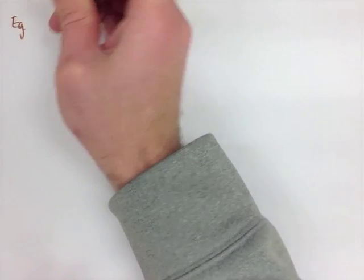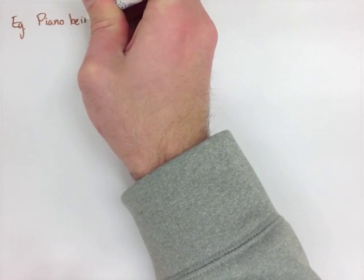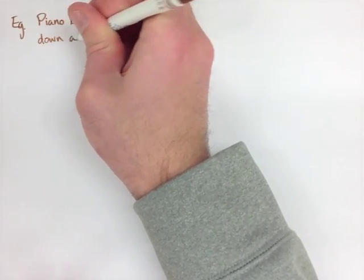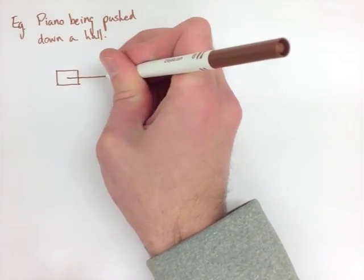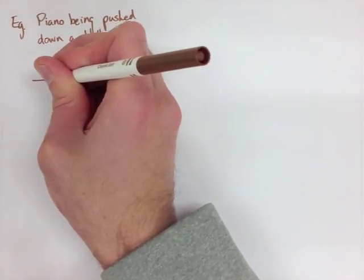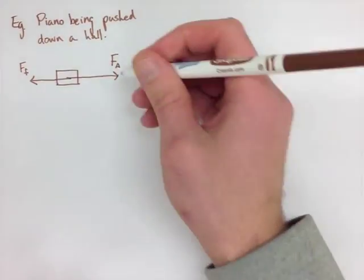We're now going to look at how to calculate the net force using the first and the third example on the last page. Now looking at the first example, we have a piano being pushed down a hall. I want you to ignore all the writing that's on the right side of your note.